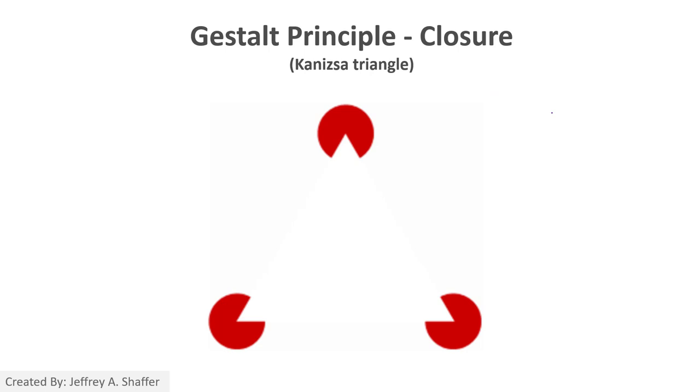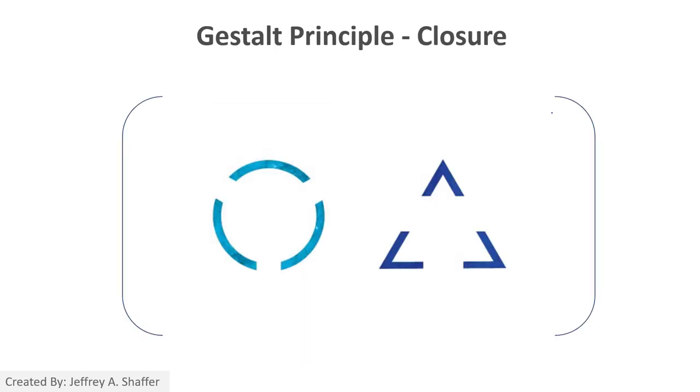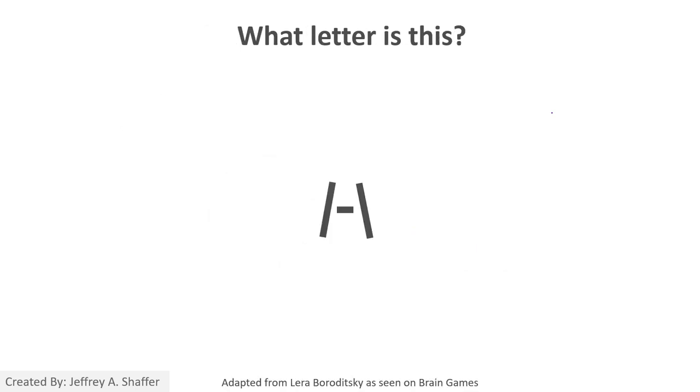This is also another example where our human brains can create a triangle. There is no triangle here, but we can see a triangle. Here we can also see a complete circle and complete triangle because our mind will work with the information we have.